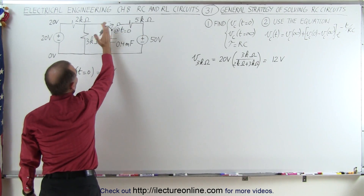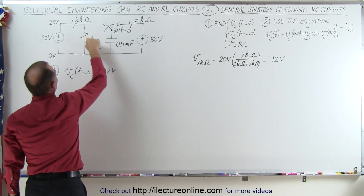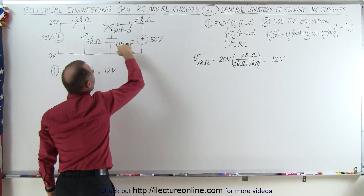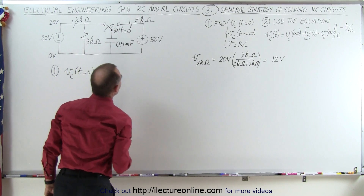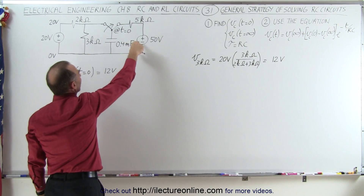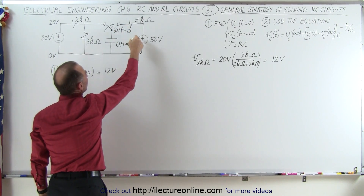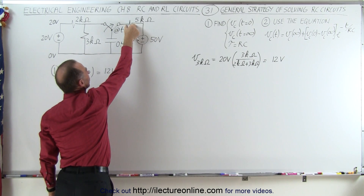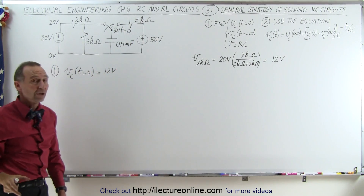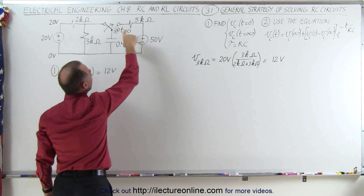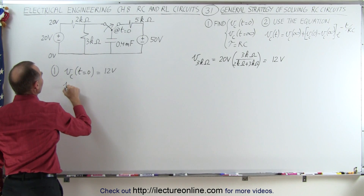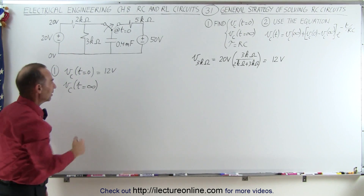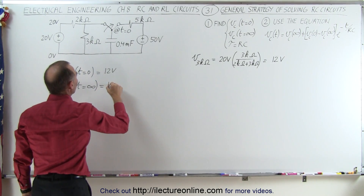Now the switch moves from this position to that position. There's no longer current flowing through the capacitor from the first source, but now current flows through the capacitor from this voltage supply. That will happen until the capacitor is fully charged, at which point no current flows through the resistor, meaning no voltage drop across it — so the voltage across the capacitor must equal the source voltage. Therefore, the voltage across the capacitor at time equals infinity equals 50 volts.